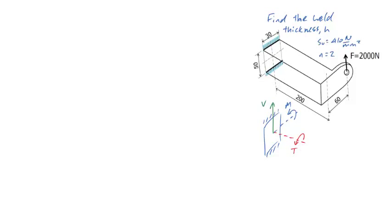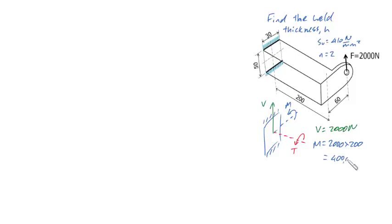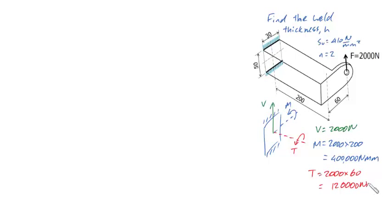We can find the value of each of these by using the sum of forces in all directions equal to 0, and the sum of moments in all directions equal to 0. So V is equal to 2,000 newtons. M is equal to 2,000 times the perpendicular distance, which is 200 millimeters, giving 400,000 newton millimeters. And T is found similarly: 2,000 times 60, which equals 120,000 newton millimeters.